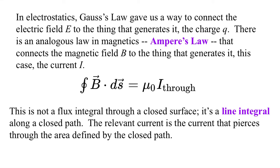In electrostatics, Gauss's law gave us a way to connect the electric field E to the thing that generates it, the electric charge Q. There's an analogous law in magnetics, Ampere's law, that connects the magnetic field B to the thing that generates it, in this case, the current I.